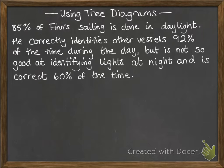So 85% of the time Finn goes sailing, he goes in daytime and he correctly identifies other vessels that he sees out on the sea 92% of the time during the day. But he's not very good with the lights at night and he's only correct 60% of the time when he goes at night and has to identify them by their lights.